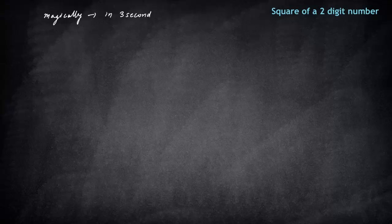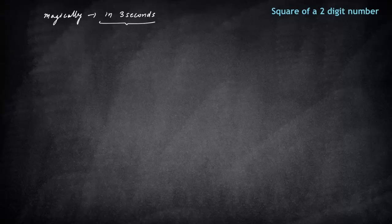That's the target that you can find a square of a two digit number without doing much of a calculation in three seconds. So how we are going to do this, let's just see that. Let's start with a basic one.